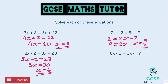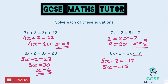And onto the last one — take away 3x from both sides, and we get 5x minus 2 equals — you've got to be careful with this because it's negative 17, so it equals negative 17. Add 2 to both sides, we get 5x equals negative 15, and then dividing by 5 — negative 15 divided by 5 is negative 3 — and there's our final answer.